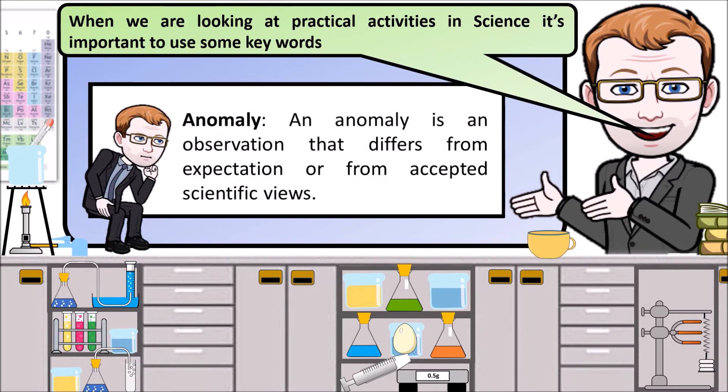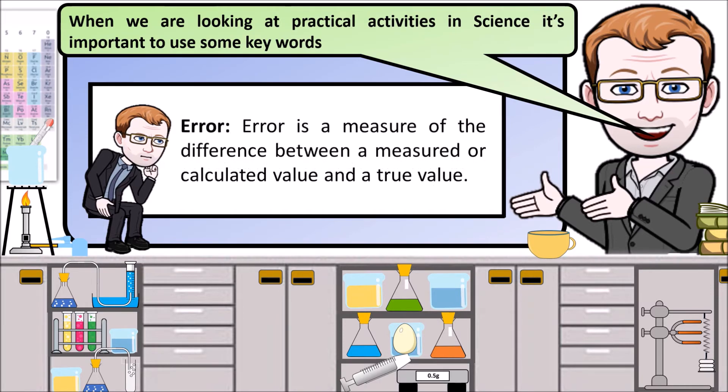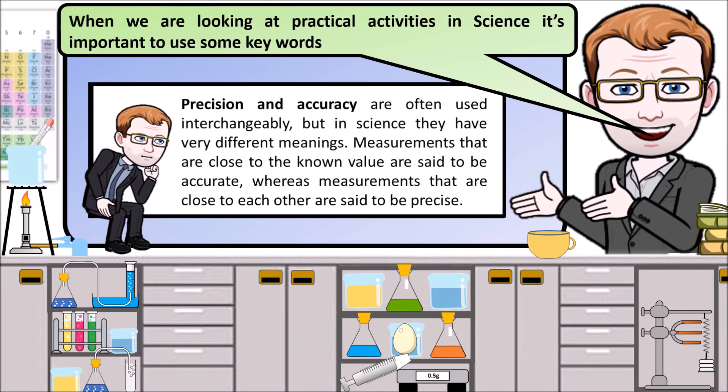An anomaly is a result that does not fit the pattern. A correlation is the relationship between two variables. An error is a measure of the difference between the measured and calculated value and the true value. Precision and accuracy are often used interchangeably, but in science they have very different meanings. Measurements that are close to the known value are said to be accurate, whereas measurements that are close to each other are said to be precise.